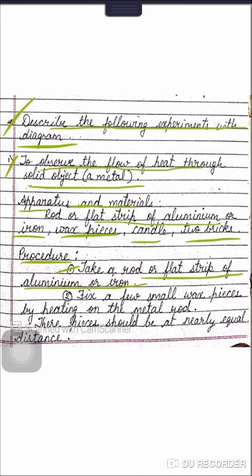Transfer of heat by convection in water. Apparatus and material: a round bottom glass flask, water, tripod stand, wire gauze, Bunsen burner, potassium permanganate, straw.